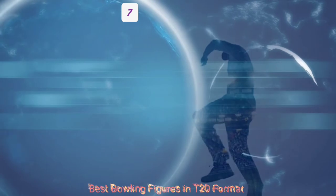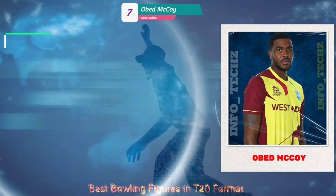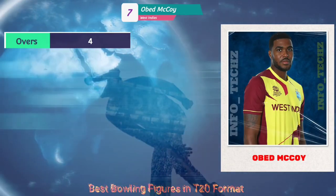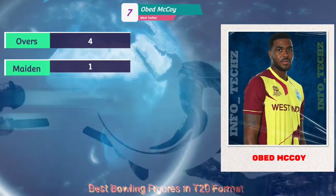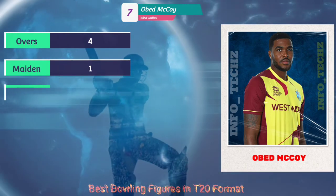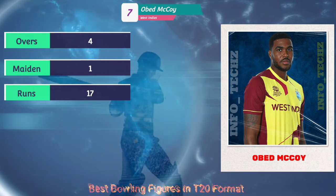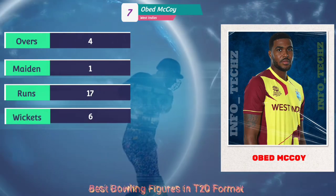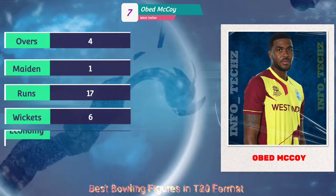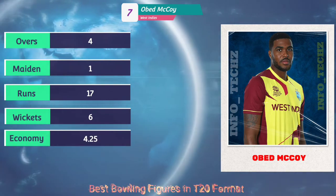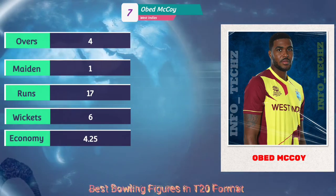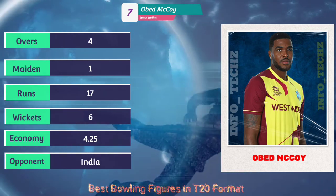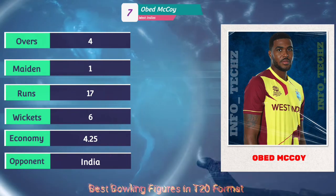At number seven, Obed McCoy, a West Indian player — four overs, one maiden, 17 runs, six wickets, and an economy of 4.25. His opponent was India.